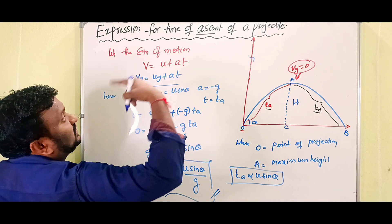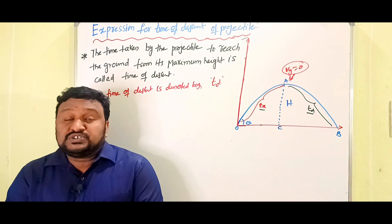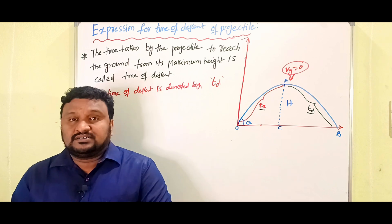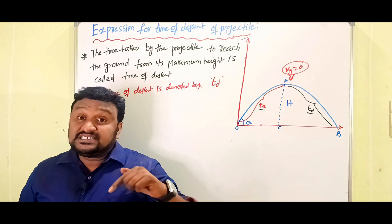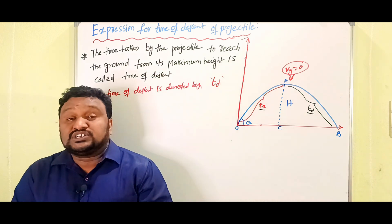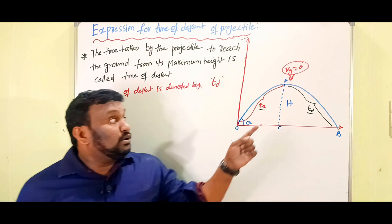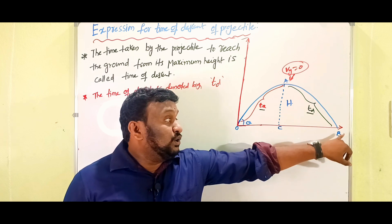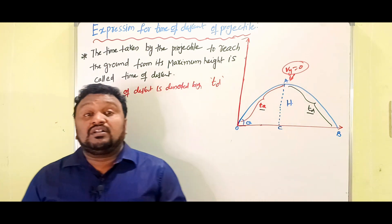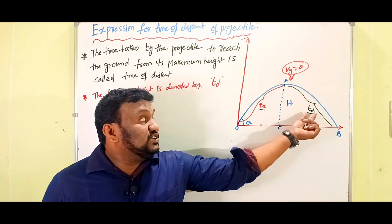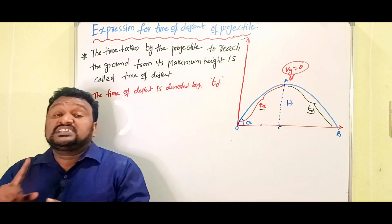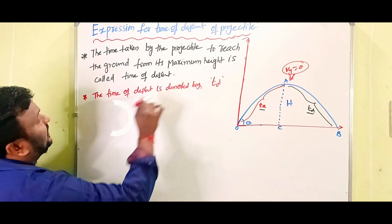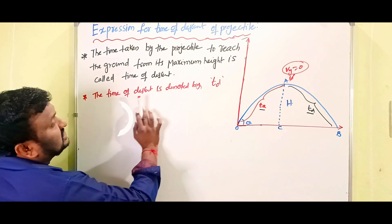Now we will derive the expression for time of descent. The time taken by the projectile to reach the ground from its maximum height is called the time of descent, denoted by td. In the diagram, A is the maximum height point and B is the ground.